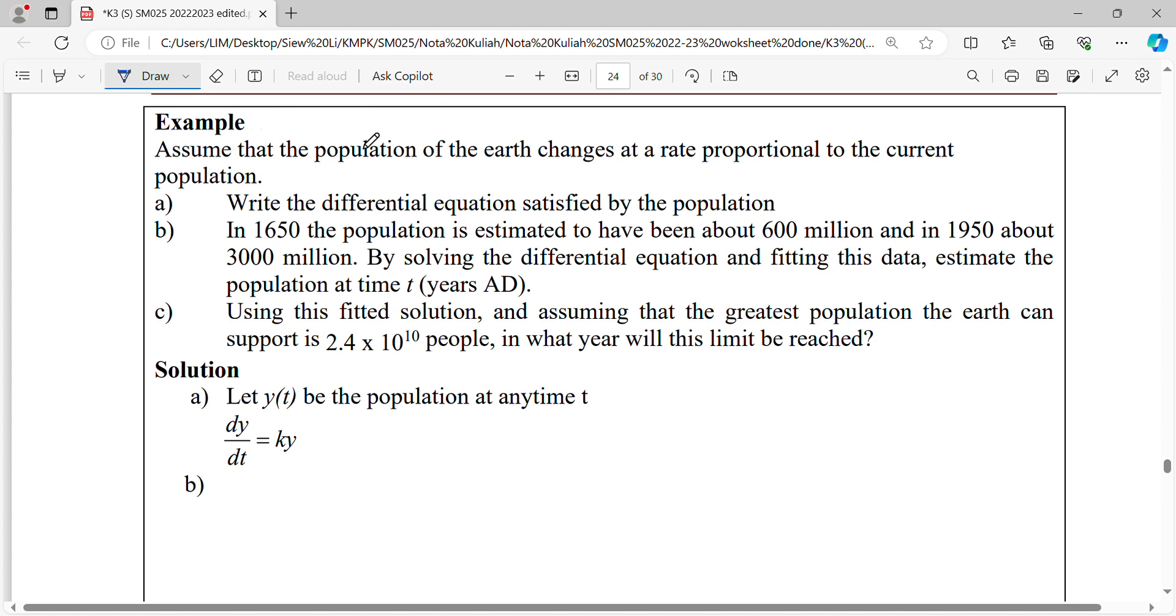Assume that the population of the earth changes at a rate proportional to the current population, so the rate of changing population is proportional to the current population. Let y in terms of t represent the population at any time t.